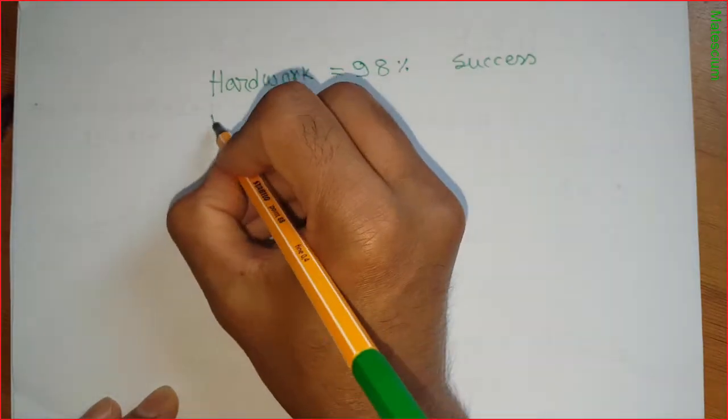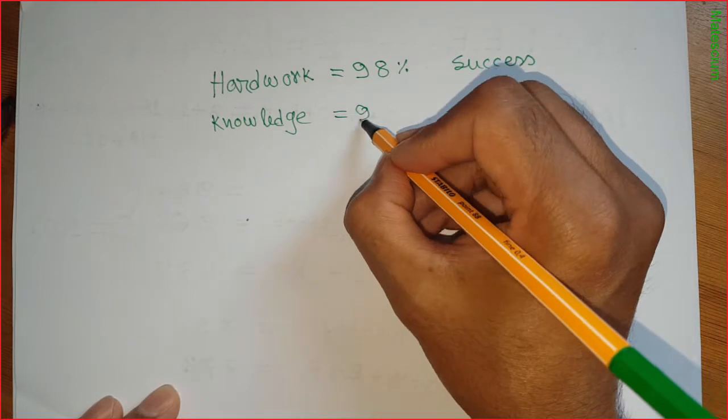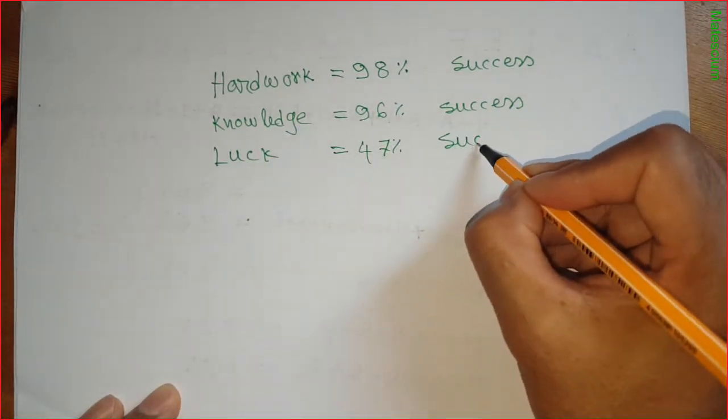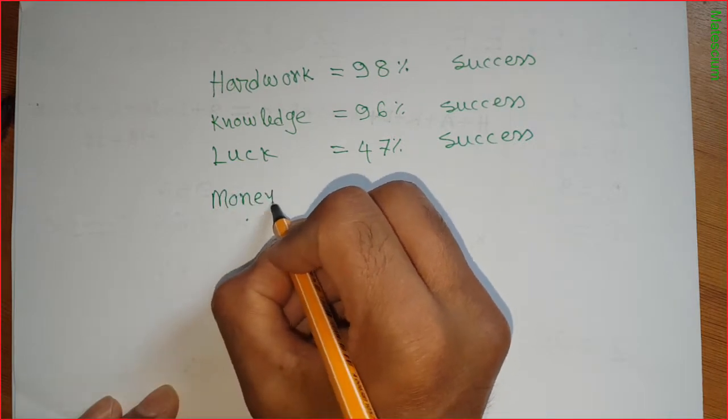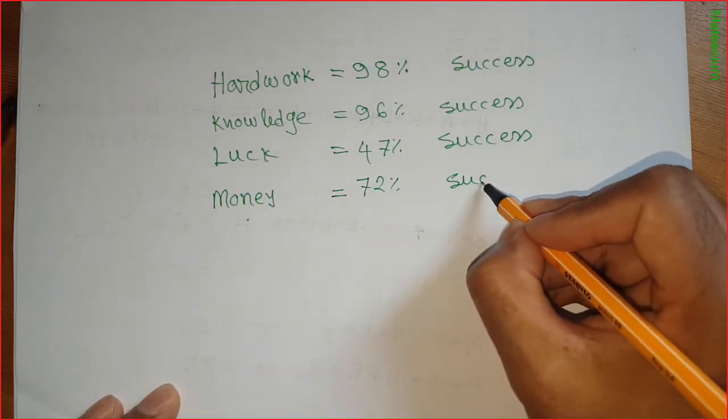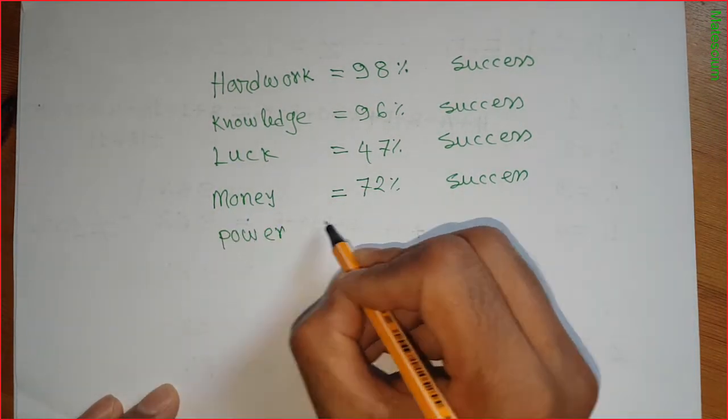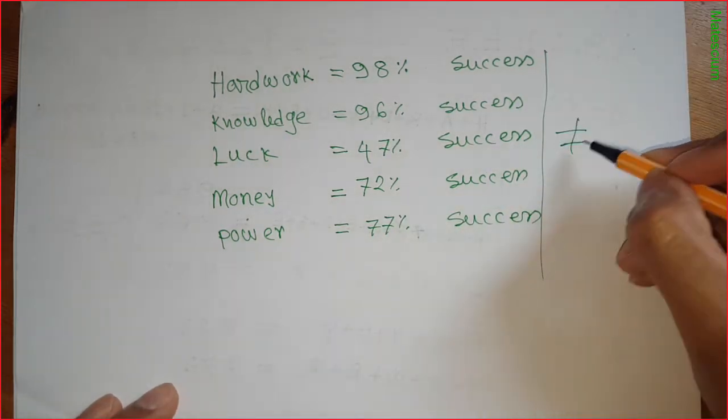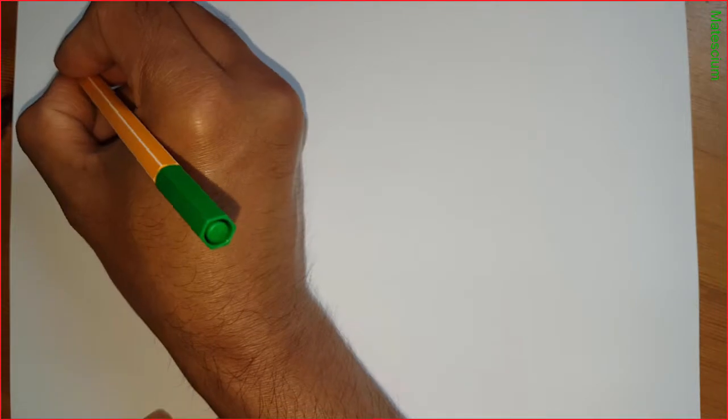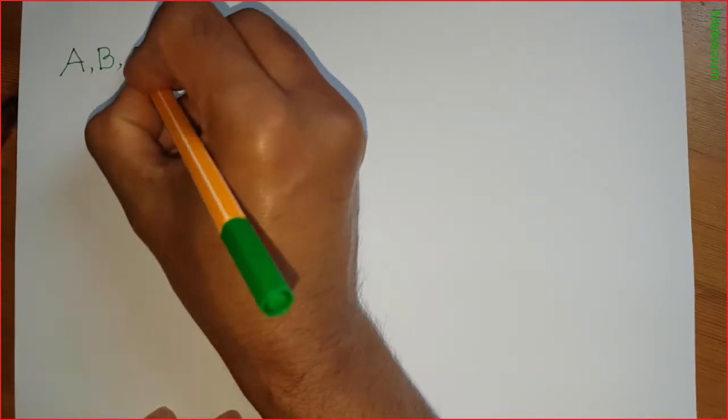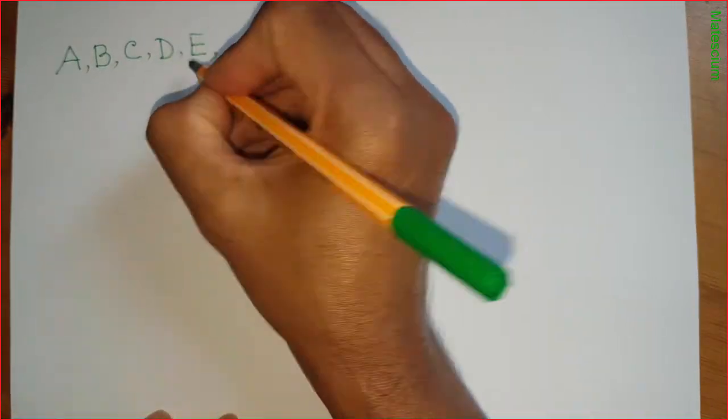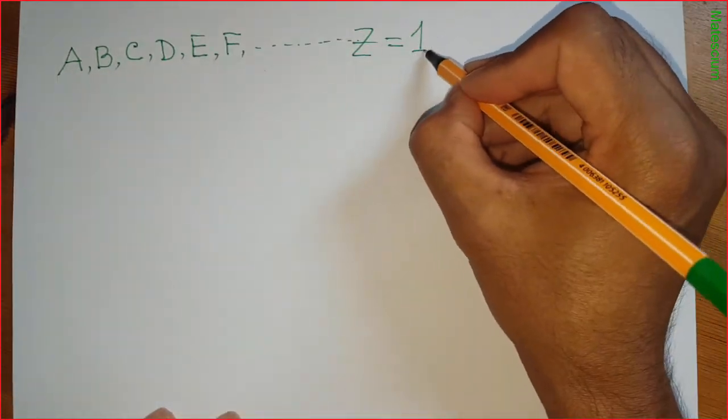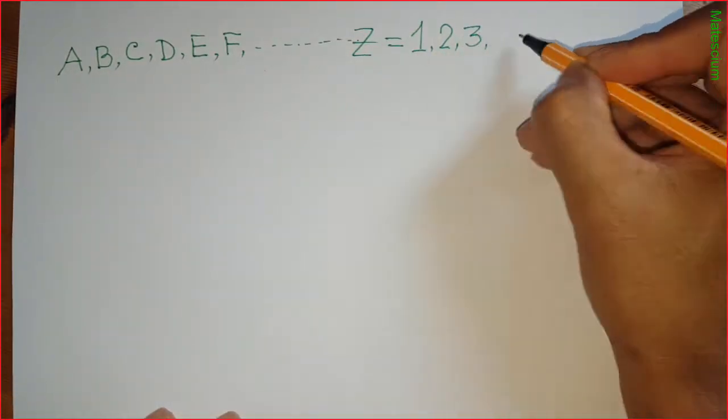Simple question here: which thing can give you 100 percent success in your life? Hard work, knowledge, luck, money, or even attitude? Mathematically, I will show you which one can let you get success in your life. Let's consider A, B, C, D, E, F, and up to Z. Their position values are 1, 2, 3, 4, 5, 6, and up to 26 respectively.